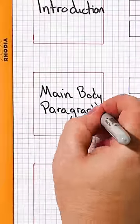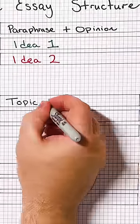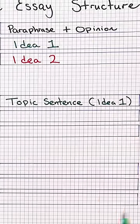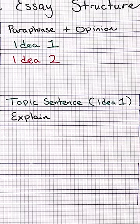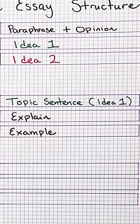Main body paragraph one: take your first main idea and put it in your topic sentence. Explain that main idea and give an example.